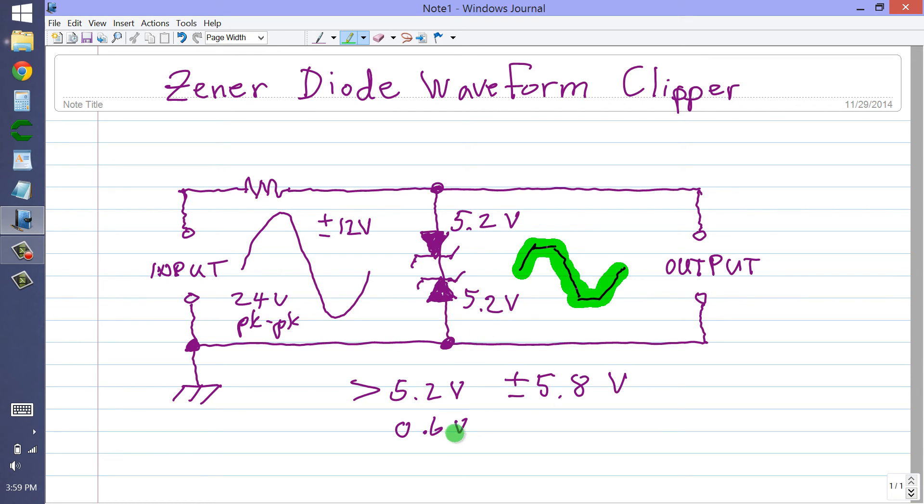Remembering, of course, that you always have to add this 6 tenths of a volt forward bias for the other Zener diode, because they are connected in series, reverse series, not reverse parallel. Here I have the cathodes facing each other. I don't really see any reason why the thing wouldn't work just the same way if you reversed these diodes and had the anodes facing each other.